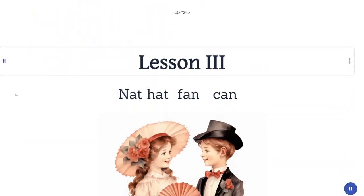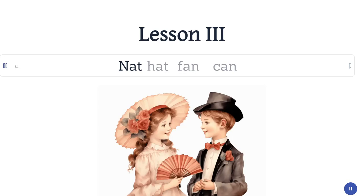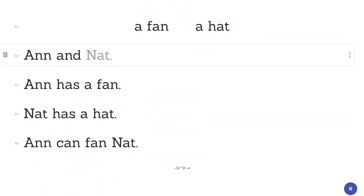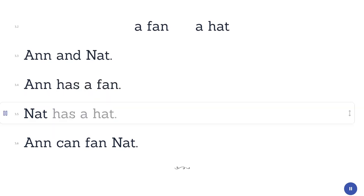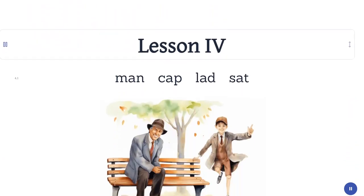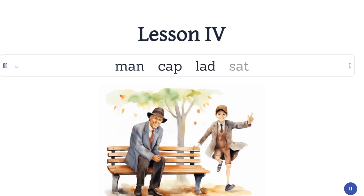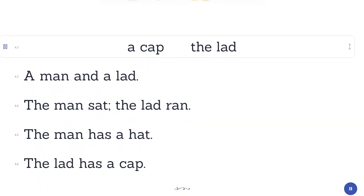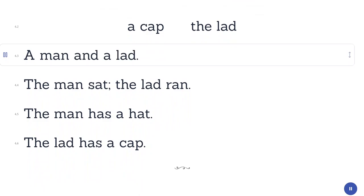Lesson Three. Nat. Hat. Fan. Can. A fan. A hat. Ann has a fan. Nat has a hat. Ann can fan. Nat can fan. Lesson Four. Man. Cap. Lad. Sat. A cap. The lad. A man and a lad. The man sat. The lad ran.